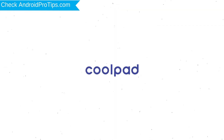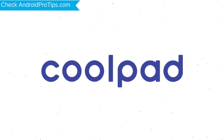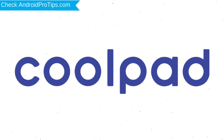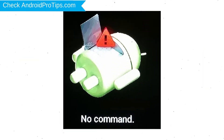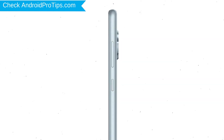Release both buttons when you see a logo. Afterward you will see an Android exclamation mark. Then, while holding down the power button, press and release the volume up button.